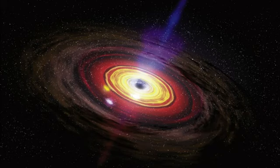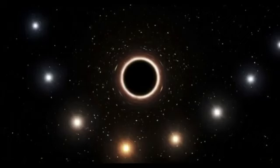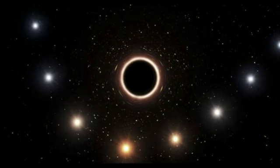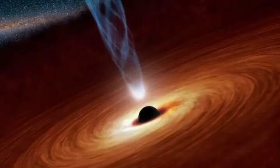Observations of the star S2 orbiting Sagittarius A asterisk have been used to show its presence and produce data on the central supermassive black hole of the Milky Way, leading to the conclusion that Sagittarius A asterisk is the location of this black hole.